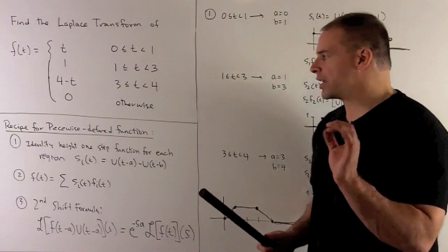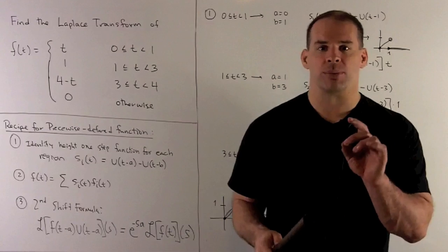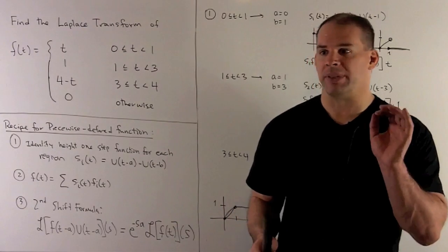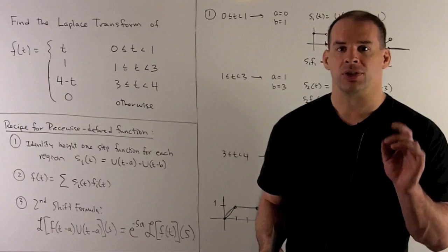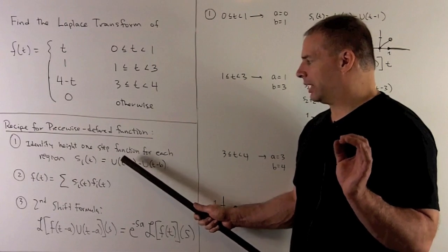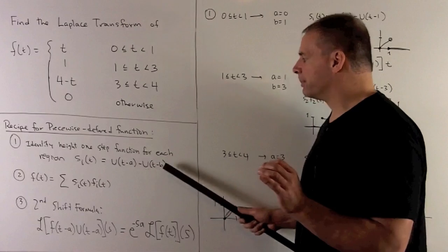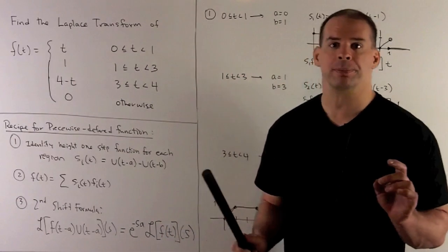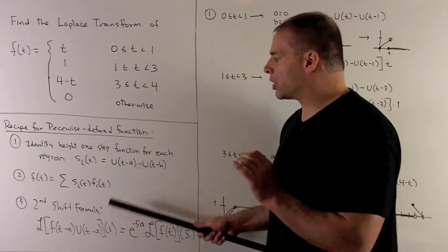What's our recipe? The recipe for pulling apart a piecewise defined function is to rewrite it in terms of shifted unit step functions, which brings in the second shift formula. For each region with endpoints a and b, we assign a height-one step function defined as u(t minus a) minus u(t minus b). Then we reconstruct f of t as a sum of these step functions multiplied by the function for each region — a linear combination that lets us apply the second shift formula.